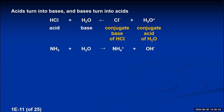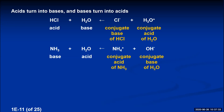Looking at the ammonia and water reaction from left to right: ammonia gains a hydrogen — it's acting as a base. Water loses a hydrogen — it's acting as an acid. The hydroxide ion in reverse gains a hydrogen, so it's a base — specifically the conjugate base of water. The NH₄⁺ ion in reverse loses a hydrogen — it's acting as an acid — so ammonium is the conjugate acid of ammonia.